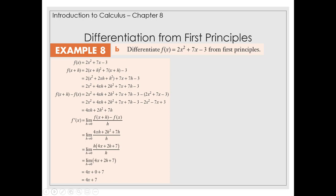Okay, so same thing again. This time however, we're just actually finding the expression, we're not finding the expression at a particular value. So we have f(x) = 2x² + 7x - 3. We're going to have f(x + h), so that's going to be 2(x + h)² + 7(x + h) - 3.